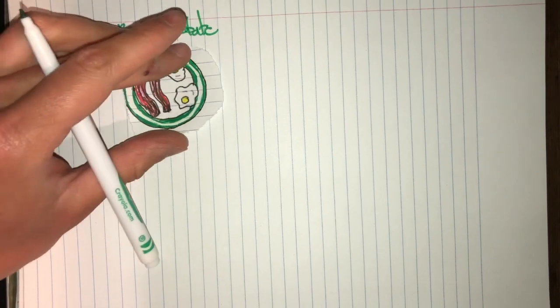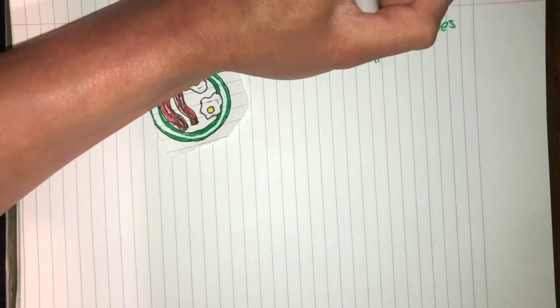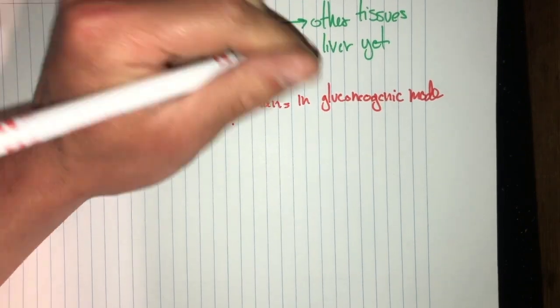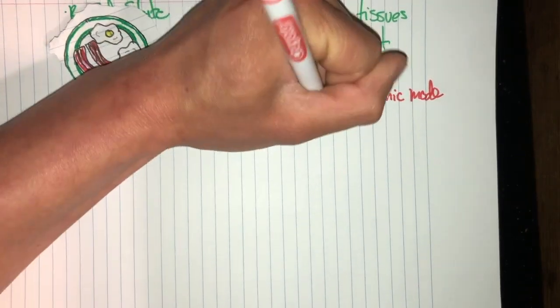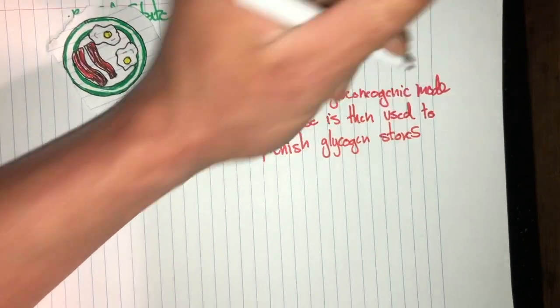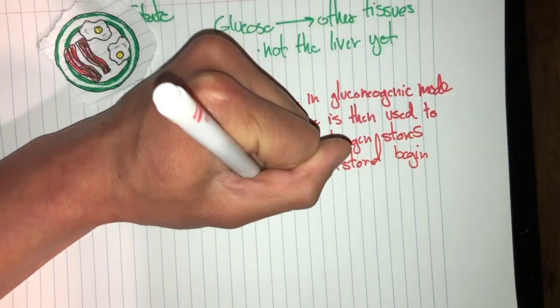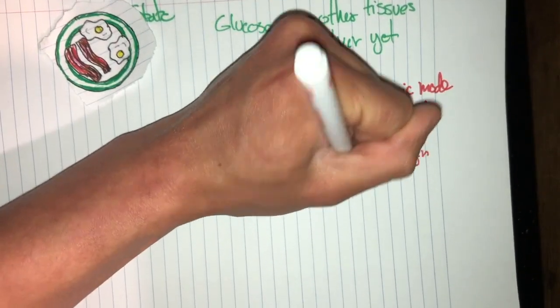Let's move on to the refed state of the metabolism. After a full breakfast, glucose first enters other tissues but not the liver, not quite yet. The liver is in fact still in gluconeogenic mode. And once the tissues are replenished, that new excess glucose is used to fill the glycogen stores of the liver. And once fully restored, you can begin to process the excess glucose to fatty acid synthesis.